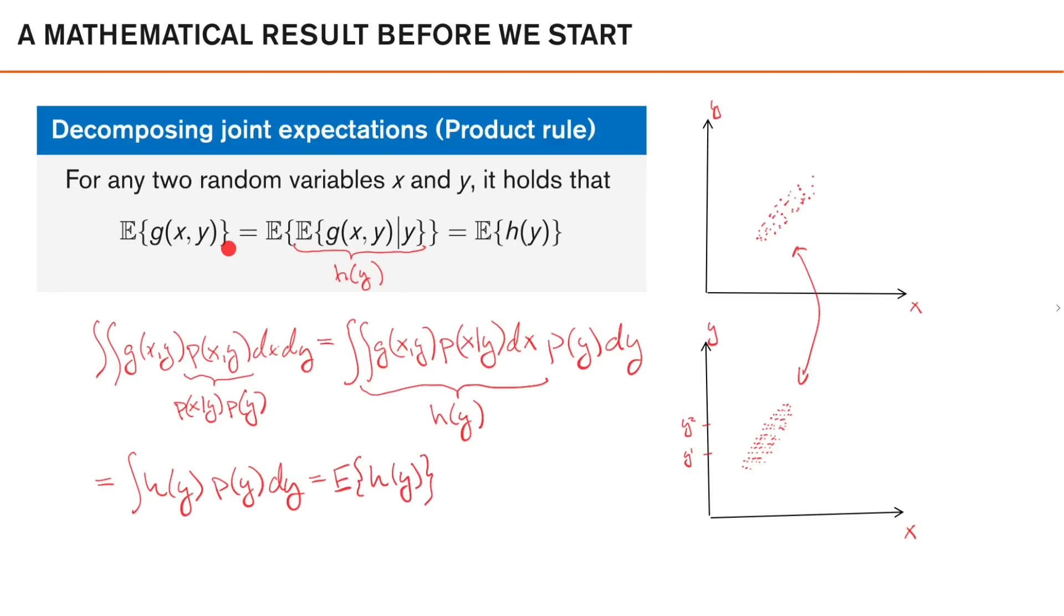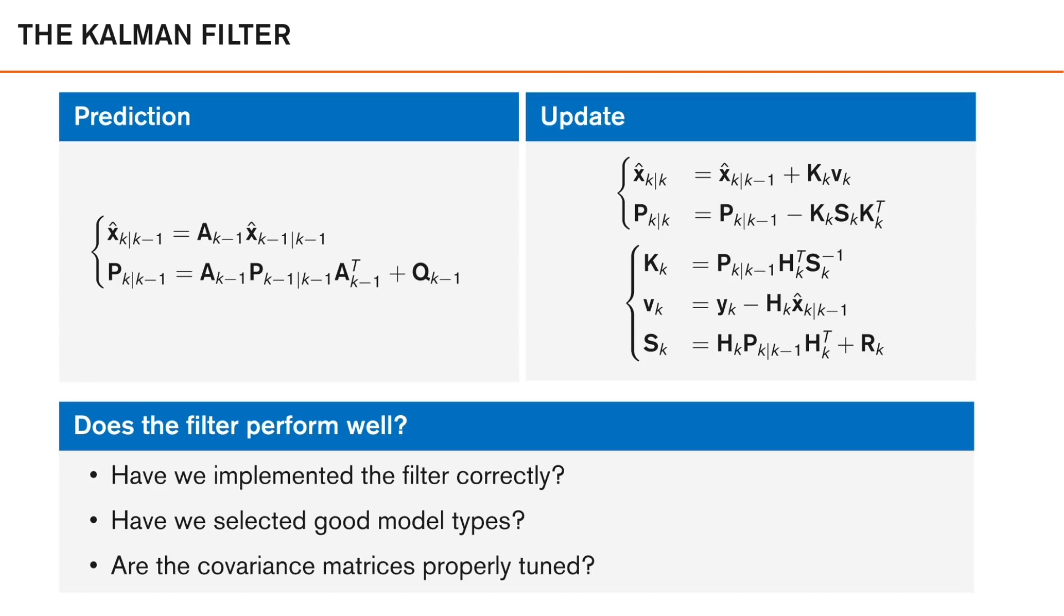So please keep this in mind as we go through the results of this lecture. So now that we know this mathematical result, let's tackle the main objective of this lecture. From previous lectures, we know how to implement a Kalman filter. First we calculate the predicted mean and covariance by solving these equations. And then we use these, together with the current observation, in order to calculate the posterior mean and covariance, like this.